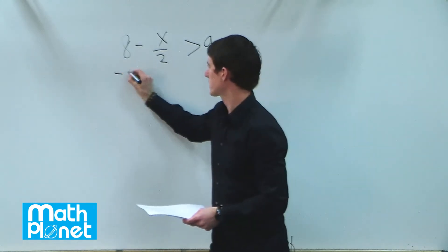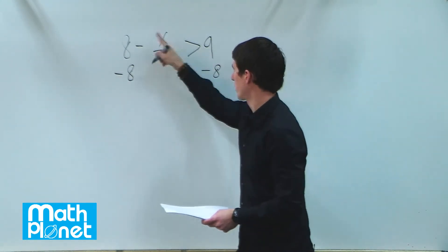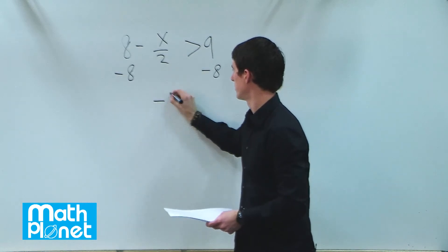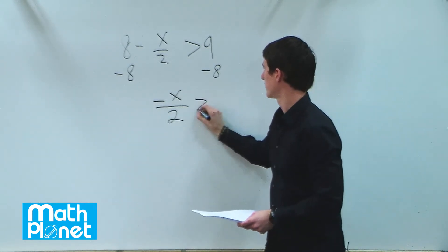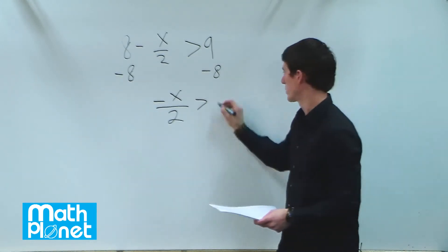If we subtract 8 from both sides, then we still have this negative x over 2 is greater than, now we have 9 minus 8, which is 1.